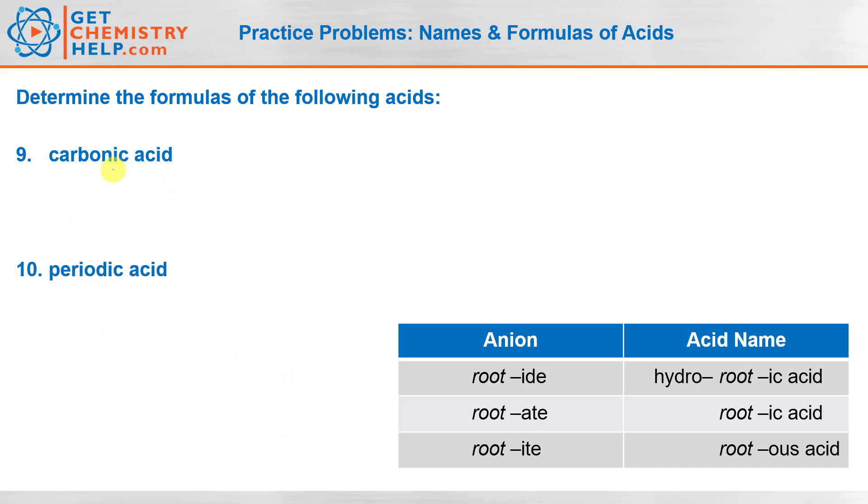And our last two. So carbonic acid. So ic acid, again, tells us that the anion ended in ate. So carbonic must have come from carbonate. So carbonate anion is CO3, two negative. So because it's two negative, we need two of those positively charged hydrogens to balance that out. So H2CO3.